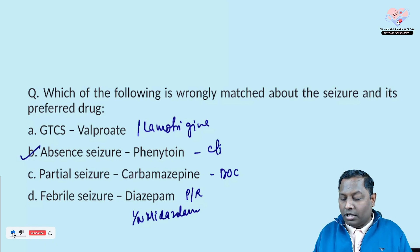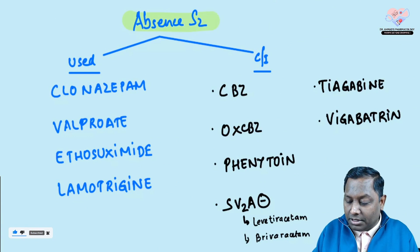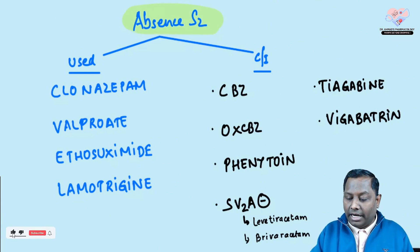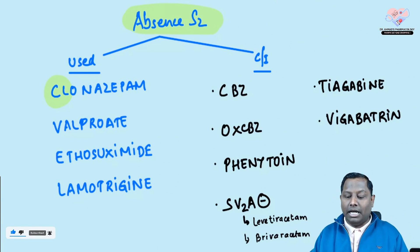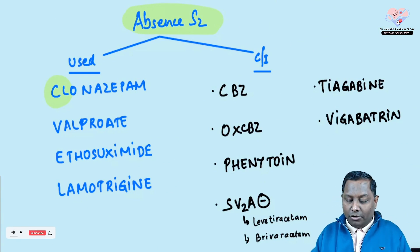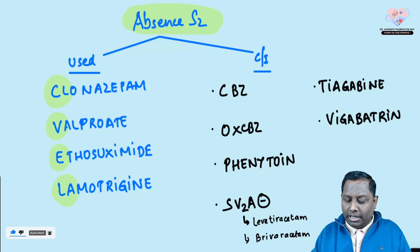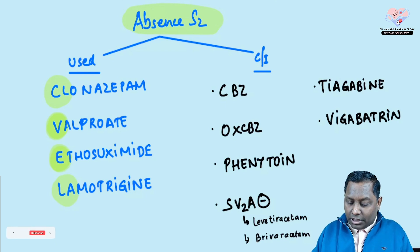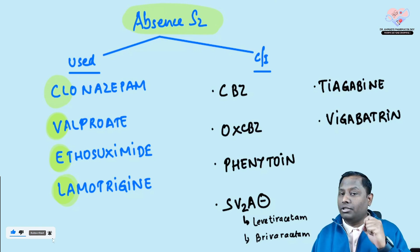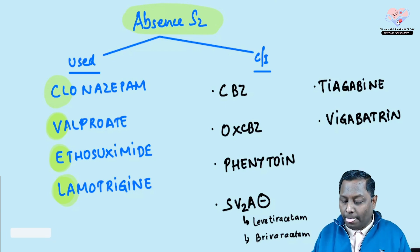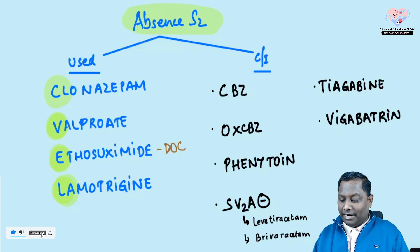A mnemonic to remember drugs used in absence seizure: think of getting absent from class to study but never studying — 'do nothing, well' — representing Valproate, Ethosuximide, and Lamotrigine. Among benzodiazepines, only clonazepam can be used. Ethosuximide is the drug of choice for absence seizure.